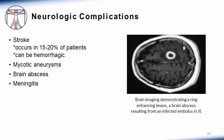Neurologic complications are also common among patients with infective endocarditis. Stroke occurs in 15 to 20% of patients and can be hemorrhagic in some cases. Stroke is often a presenting symptom of infective endocarditis. Mycotic aneurysms are infected areas of arterial dilation that can occur in the cerebral vessels and are usually silent until rupture occurs. Brain abscess and meningitis are less common neurologic complications of infective endocarditis.